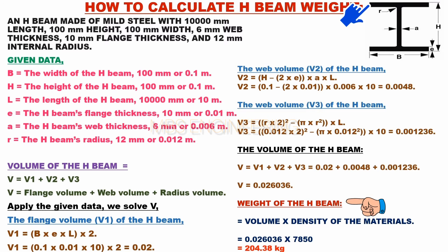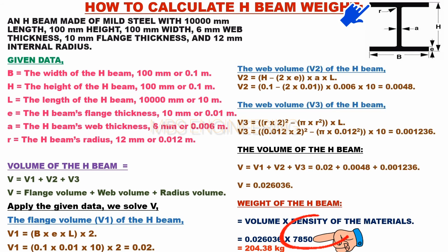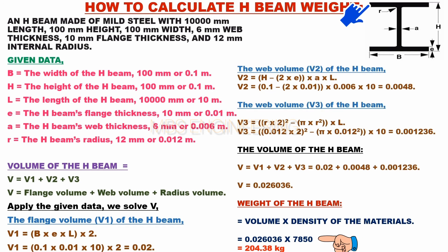Next, we calculate the weight of the mild steel H-beam. Weight equals volume multiplied by density. The density of mild steel is 7850 kilograms per cubic meter. Therefore: 0.026036 × 7850 = 204.38 kilograms. The weight of the mild steel H-beam is 204.38 kilograms.